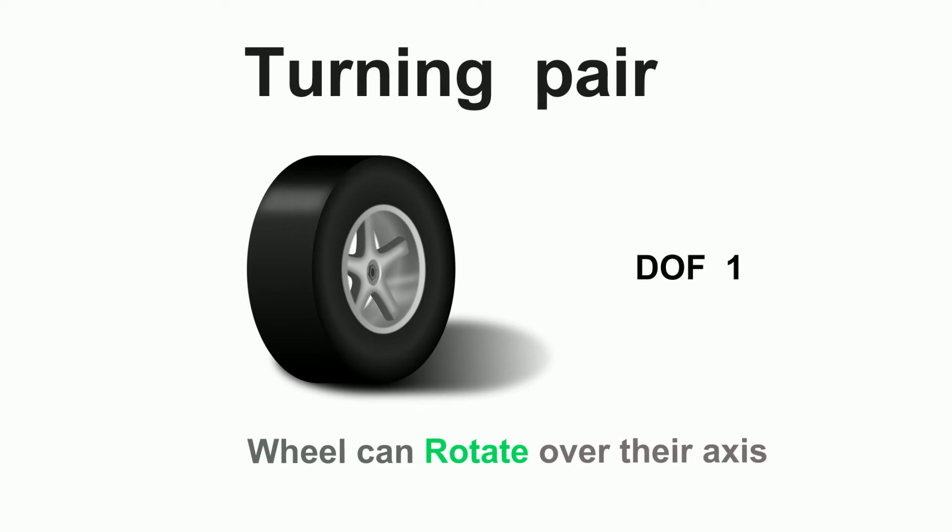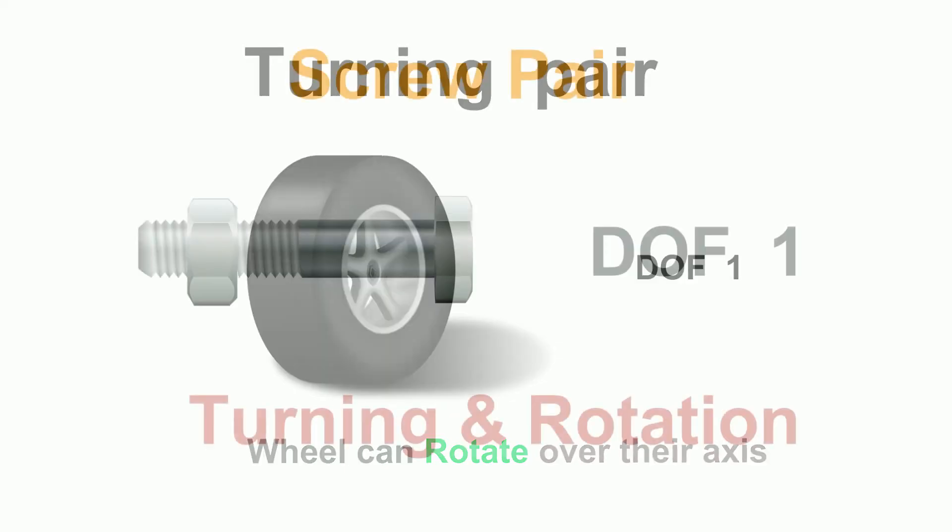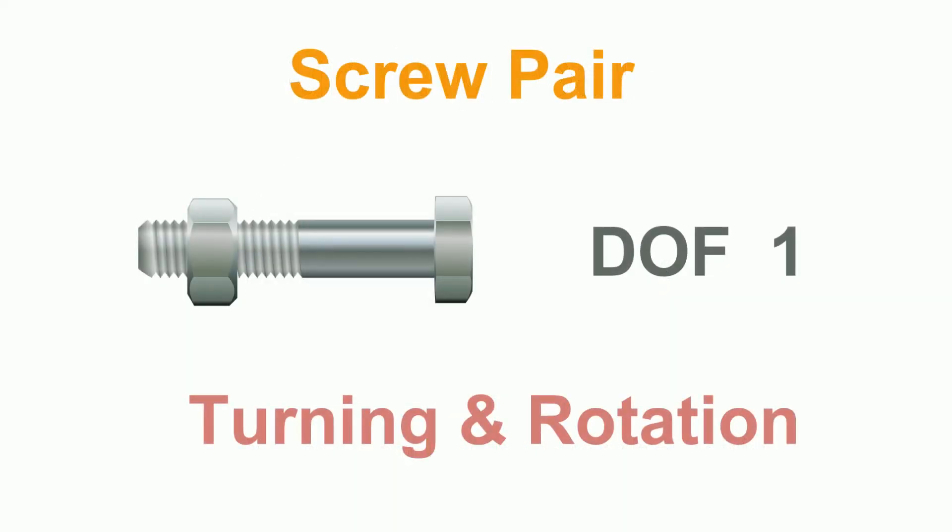Three, nut and bolt is an example of the screw pair. It has two motions: translation and rotation, but the coordinate of the two motions is the same, so it has one degree of freedom.